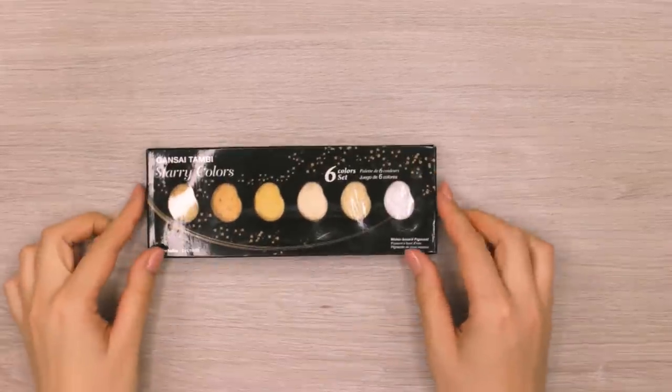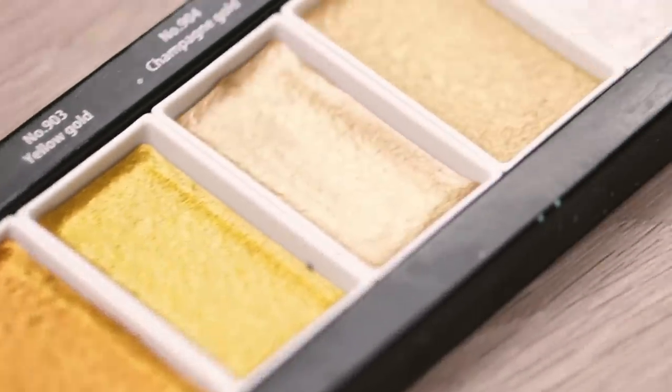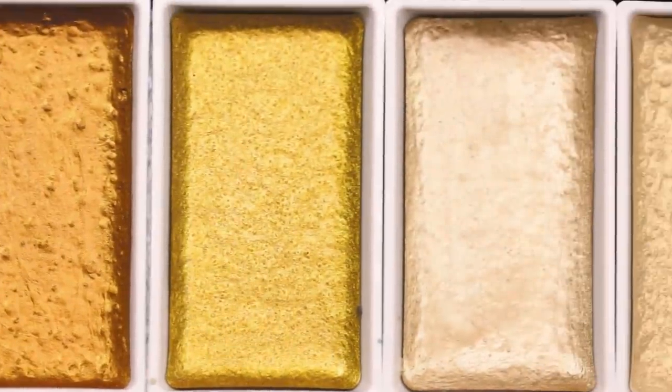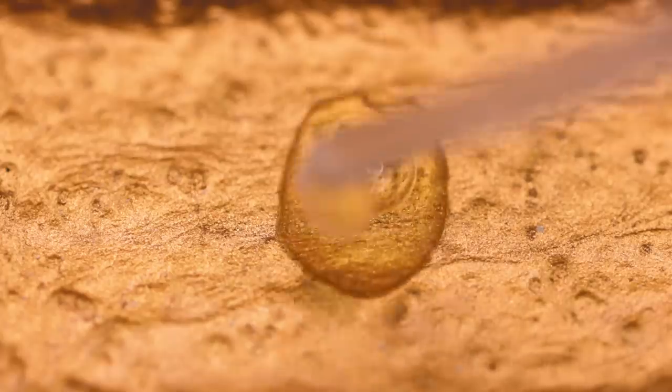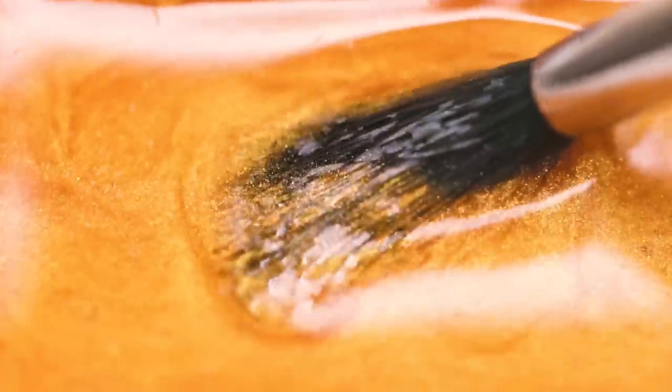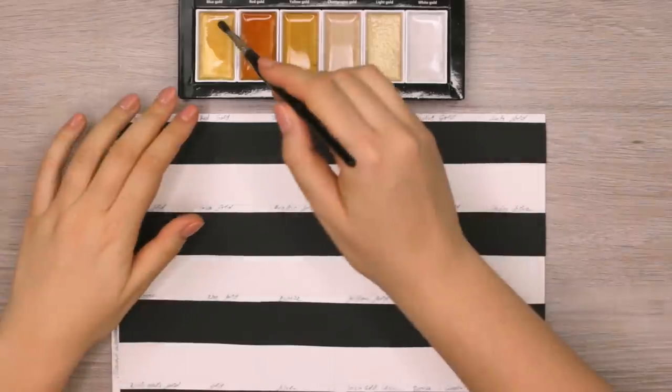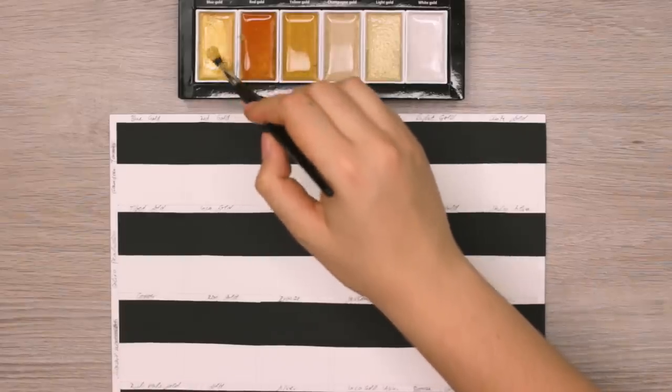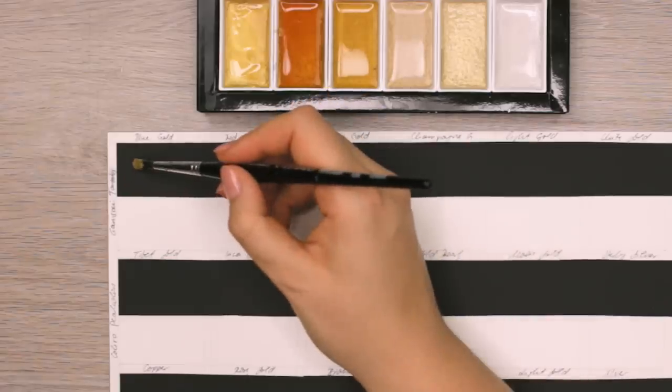The first in the test is the Gansai Tambi Gold Stericolor Set that you can get for about $10 on Amazon. It comes with six different shimmery colors from gold to silver. To activate the colors and to get the most of the paint, I first added a little bit of water into each tray and then let the paint soak it up first so the paint can be activated nicely. This way you make sure that you will be able to load up your brush with as much paint as possible. To be able to see how the paints look on the dark and light background, I glued a strip of black cardboard paper on top of the white watercolor paper.